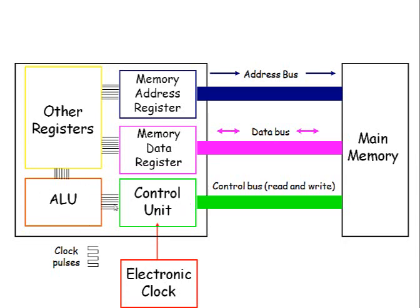You've got the ALU — the arithmetic logic unit — which performs all calculations and makes logical decisions.